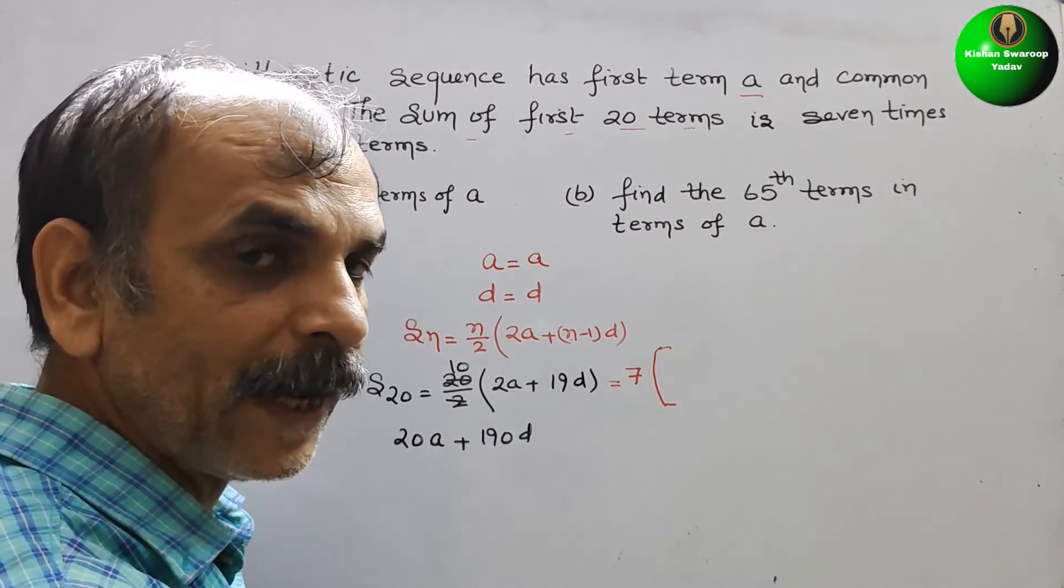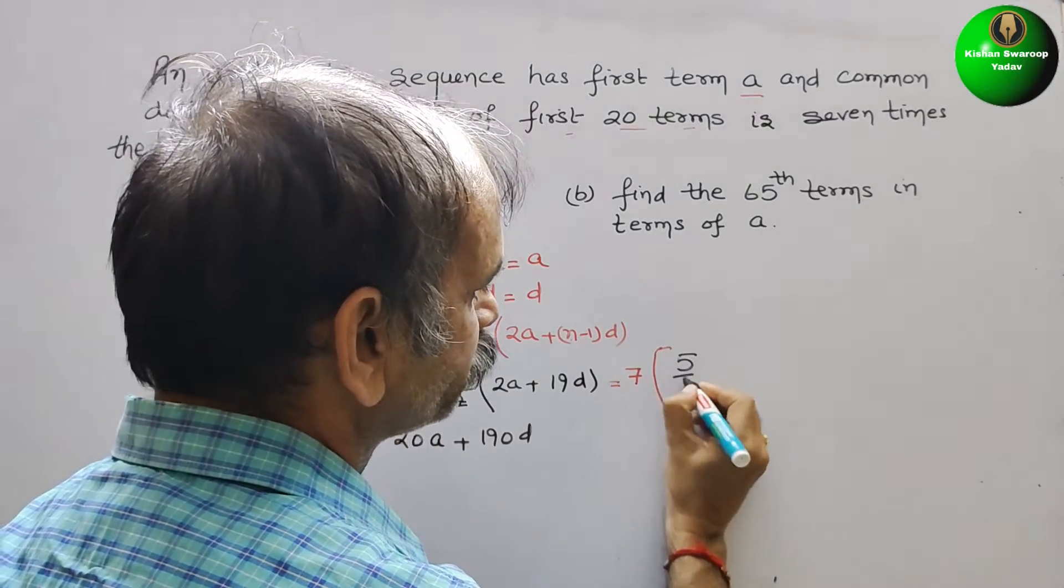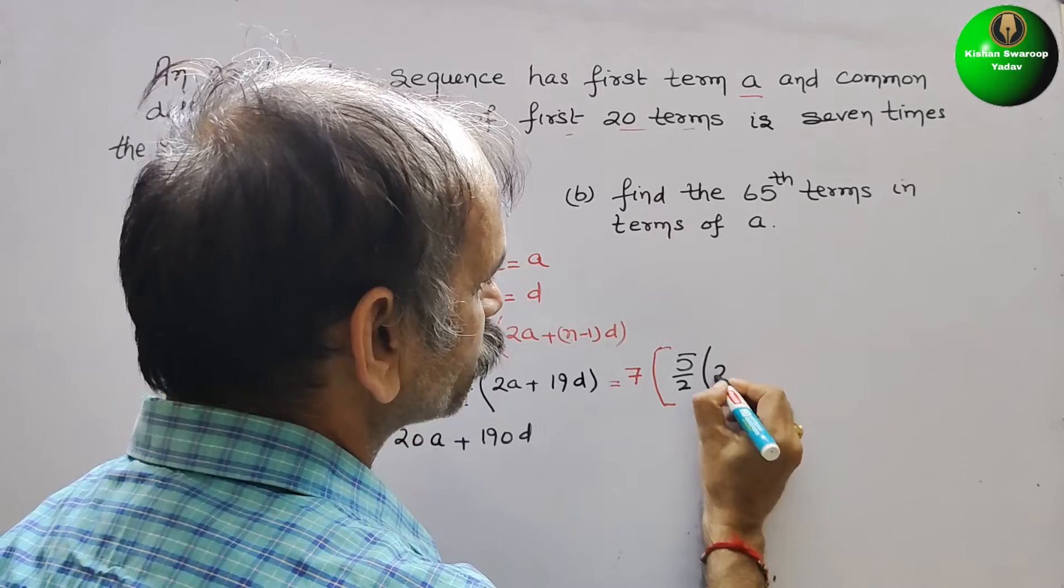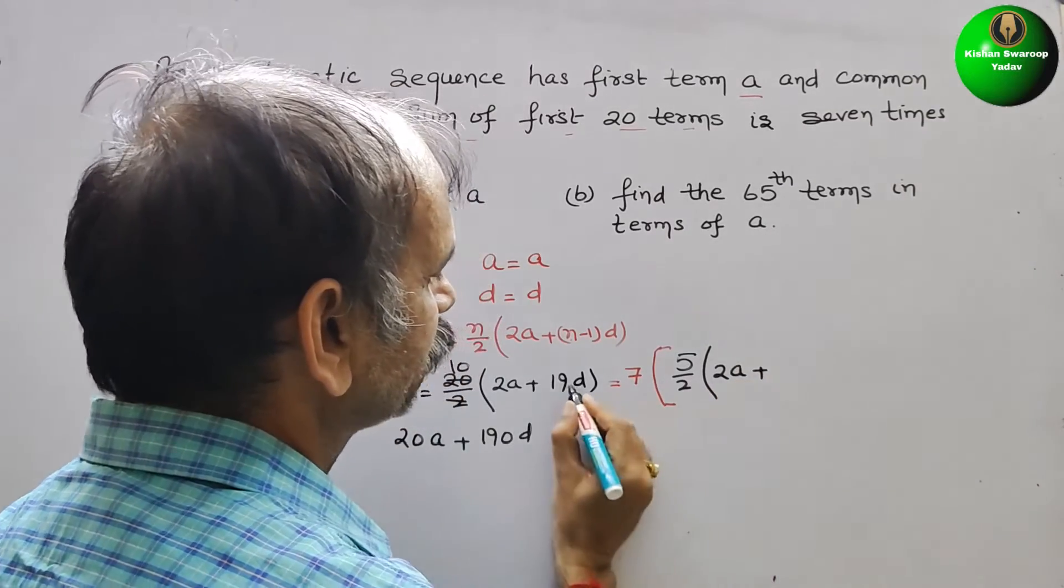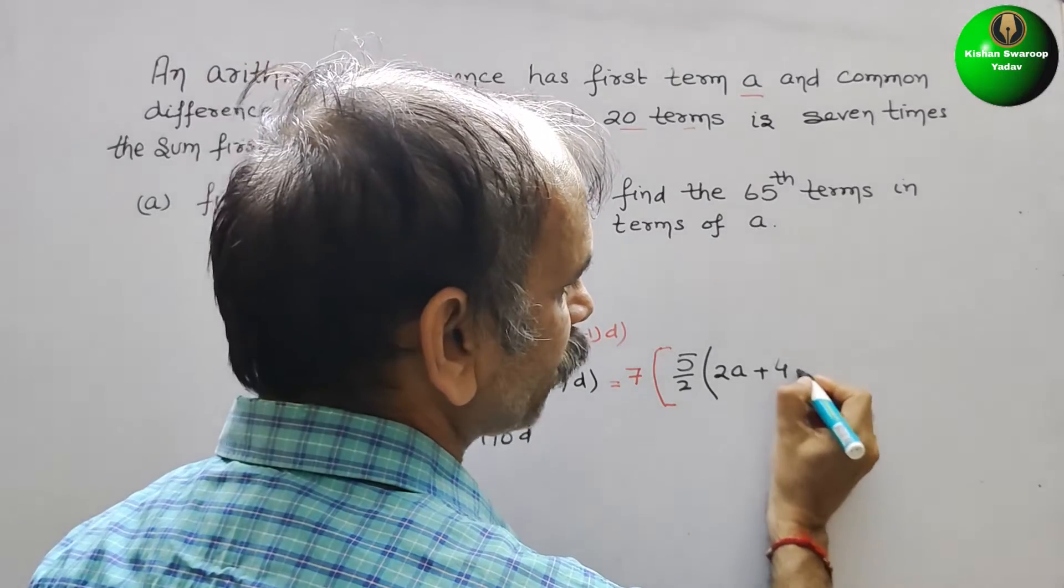So now we have to substitute again. So here comes 5, so 5 by 2, and here comes 2A plus n minus 1 is 5 minus 1 is 4, so that means 4D.